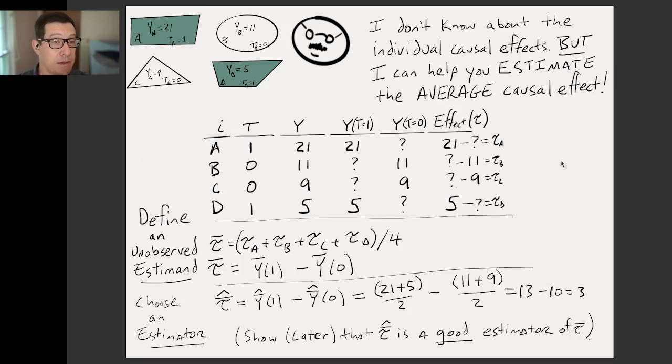So Neyman's response to the farmer is, I can't tell you about the effect on field A, field B, field C, or field D. But I can tell you that on average, the effect is three. Now, the farmer probably will also say, is that a good estimator? And Neyman can say, in fact, it is a good estimator. It's an unbiased estimator, if you randomized. And we can show other things about that, but we'll learn about estimators and their properties later.